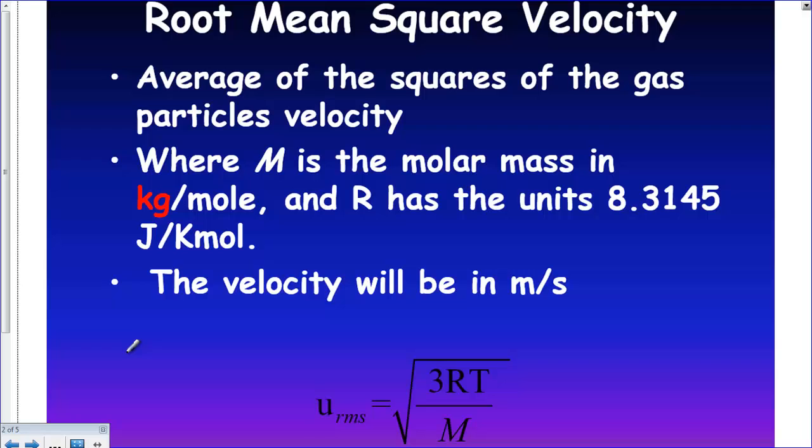To calculate the root mean square velocity, the root mean square velocity gives us the averages of all the squares of the gas particles' velocities. We take all the velocities, then square them, and then take the average of that. That's basically what this equation does for us. The root mean square velocity is equal to the square root of 3RT over M.